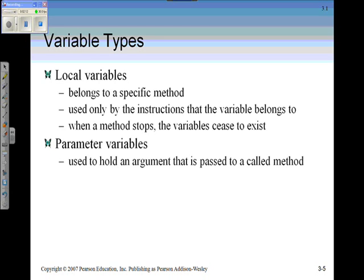With parameter variables, they're used to hold an argument that is passed to a called method. If you want to think of that in terms of methods we've already seen, think of the move method. It requires two pieces of information, which are the arguments: the distance and direction. Those are actual parameter variables. So we're passing that information between our my first method into the move method.